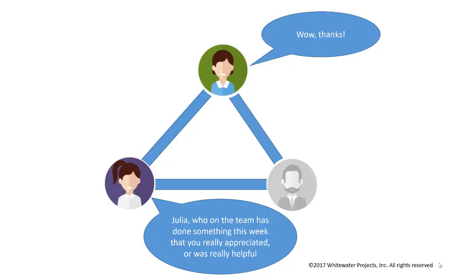That's it — super simple. Did you write it down? 'Who on the team has done something this week that you really appreciated or you thought was helpful?' It's a great protocol because it acts like a snowball. I usually ask for a couple of people who've done something interesting or that you appreciate, so you get two names. Then you go to those two people and get two names from each of them, then four people give you two names each — now you've got eight names. You're snowballing this very rapidly and you'll cover everyone on the team.